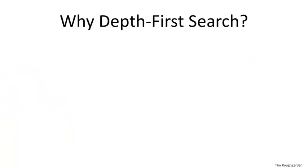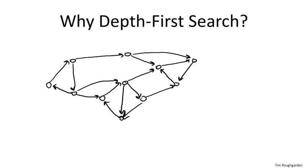The algorithm we're going to present is based on depth-first search, and that's the main reason why it will be so blazingly fast — depth-first search is blazingly fast. You might be wondering what on earth graph search has to do with computing components; they don't seem obviously related. So let's return to the same directed graph from the previous slide to see why depth-first search might conceivably have some use for computing strong components.